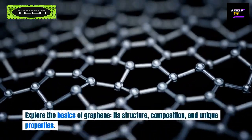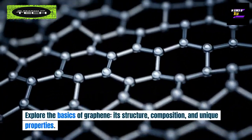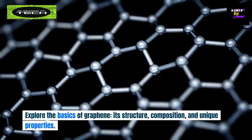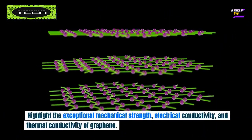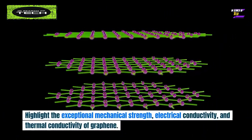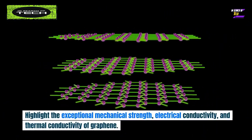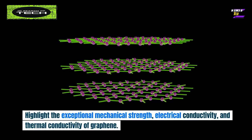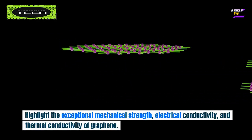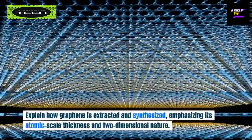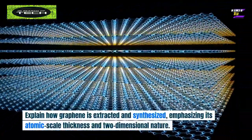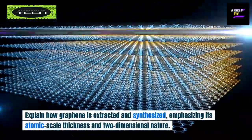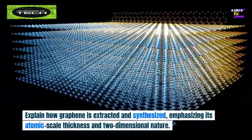Exploring the basics of graphene — its structure, composition, and unique properties — we highlight its exceptional mechanical strength, electrical conductivity, and thermal conductivity. Graphene is extracted and synthesized at atomic-scale thickness, and is two-dimensional in nature.